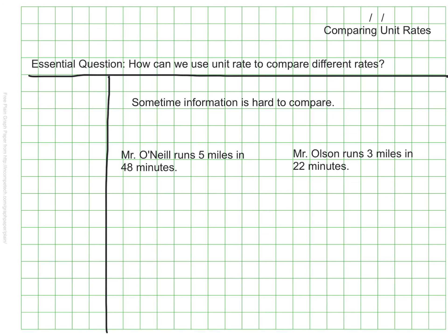Let's assume that Mr. O'Neill can run 5 miles in 48 minutes and Mr. Olson runs 3 miles in 22 minutes. Our job is to figure out who is a faster runner. Right now we are trying to compare two different mile amounts and two different time amounts. That makes it really hard to know immediately who is the faster runner.